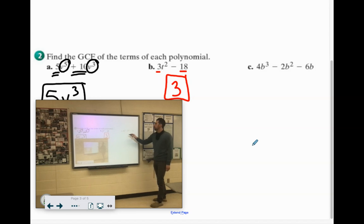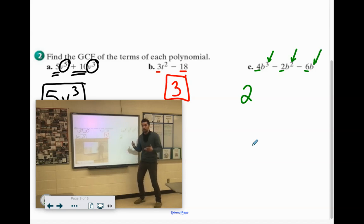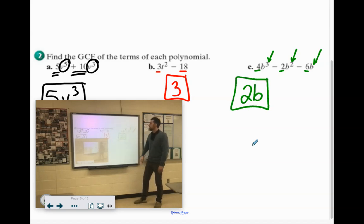All right, 4b to the third, negative 2b squared, negative 6b. 2, 4, and 6, the largest thing they have in common is 2. Now, they all have b's. This one has b to the third, b to the second, and b to the first. You have to go with what they all have, and they all have at least b to the first. So our greatest common factor is 2b.